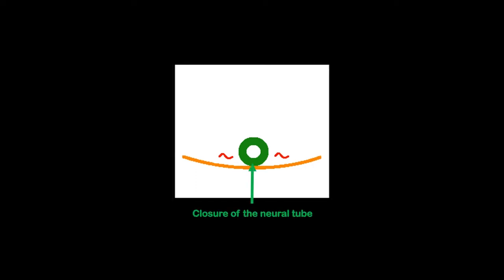This is what we call closure of the neural tube. Its next task is to separate itself from the epidermal ectoderm.